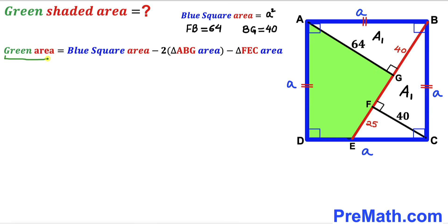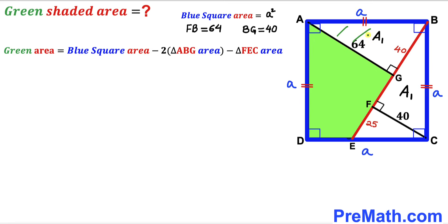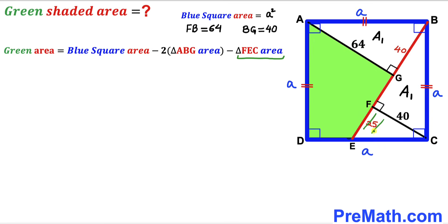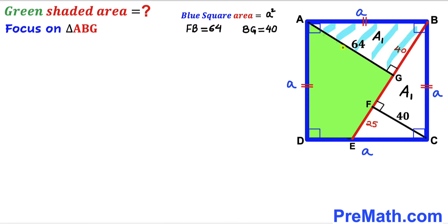We observe that the green shaded region area equals the area of the whole blue square ABCD, minus two times the area of triangle ABG (since triangle ABG is congruent to triangle BCF), minus the area of triangle FEC. Our task is now to calculate each of these three areas.